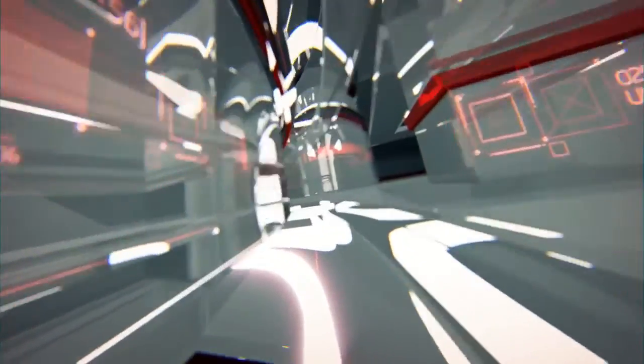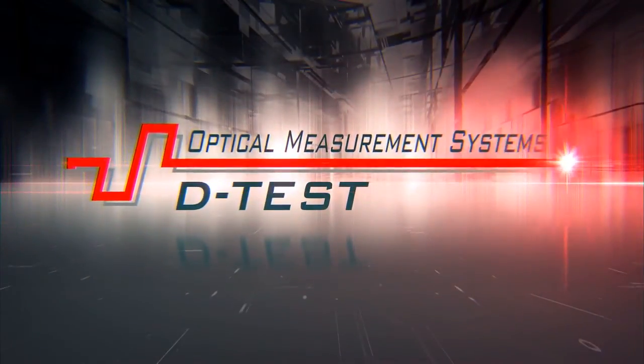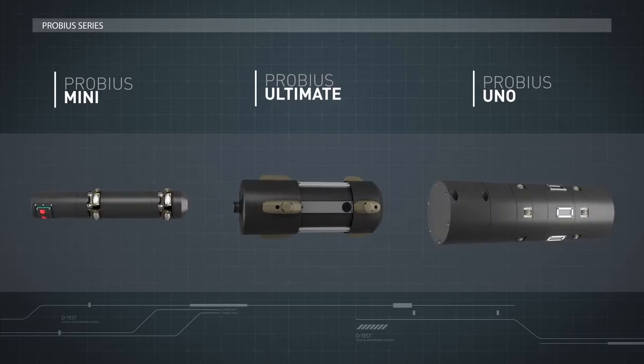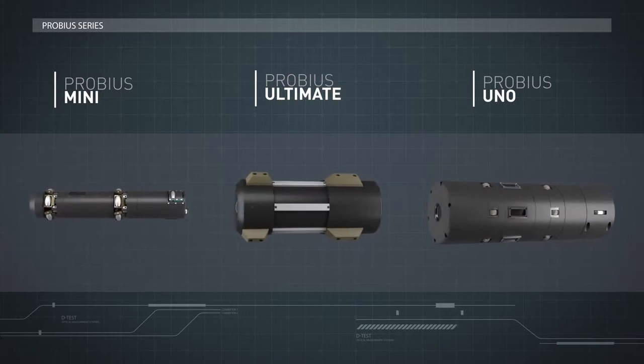D-Test Company. Manufacturing optical measurement systems since 1991. D-Test optical measurement systems. Introducing ProBius, a series of optical measurement systems designed for inner surface check of cylindrical objects.